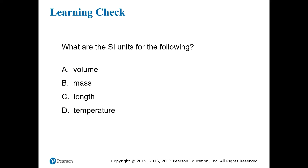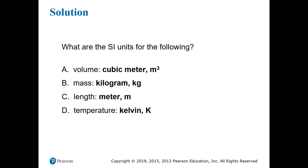This learning check is asking for the SI units for these types of measurements, but it's okay if you give metric too. Try to pause the video and remember as many as you can. In SI, the units are cubic meter for volume, kilogram for mass, meter for length, and kelvin for temperature. If you answered in metric, you should get liters for volume, grams for mass, meters for length, and degrees Celsius for temperature.